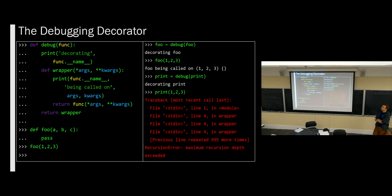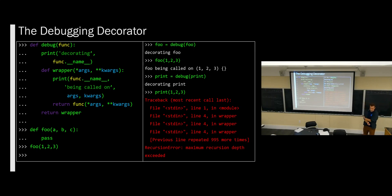Could you decorate operators? What happens when you type a less than b is you're actually writing a function call a dot dunder lt b. So you can't decorate the operator directly, but you could decorate that method that's actually being called when you use less than. You can apply decorators to any function, so you can do it there, but not directly to the operator itself.